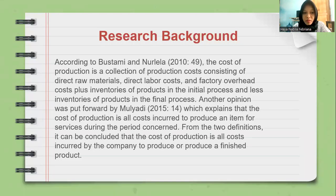According to Bustami and Nurlela, the cost of production is a collection of production costs consisting of direct raw materials, direct labor costs, and factory overhead costs, plus inventories of products in the initial process and less inventories of products in the final process.